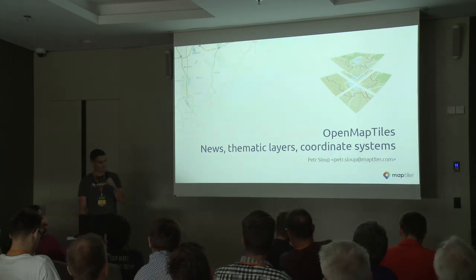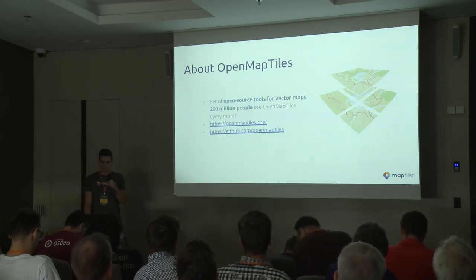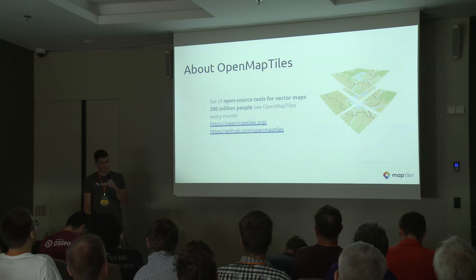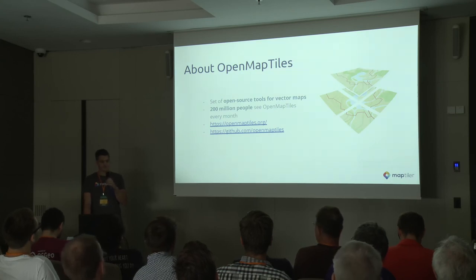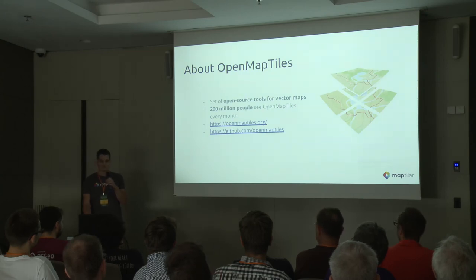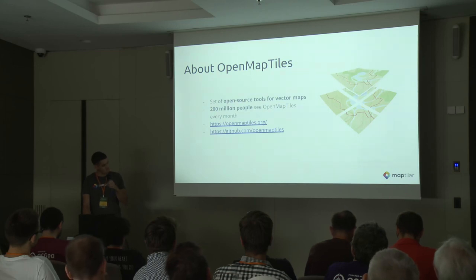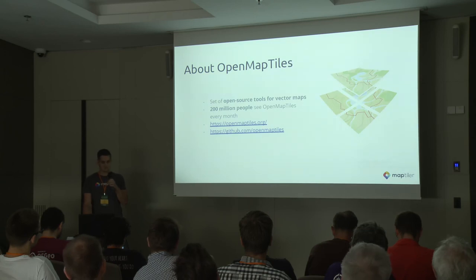For those of you that don't know, OpenMapTiles is a set of open source tools for creating and working with vector tiles and vector maps. It is estimated that more than 200 million people see OpenMapTiles somewhere on the web or in mobile applications every month, because companies like Carto, Elastic, or even NASA are using it in their products and applications. The whole thing is open source — you can go to the website or to the GitHub and look at the source code and documentation.